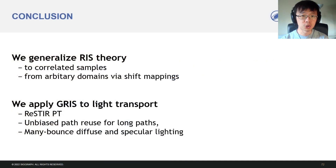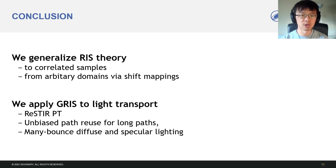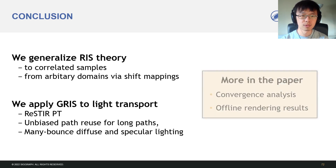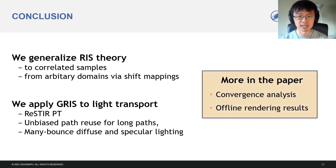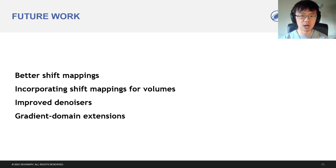In conclusion, we generalize ReSTIR theory to correlated candidate samples from arbitrary domains via shift mappings. We apply the theory to light transport to prototype ReSTIR PT, which enables efficient and unbiased path reuse for long paths by resampling. It captures many-bounced diffuse and specular lighting in real-time. We have not covered convergence analysis and offline rendering results in this talk — please see the paper for these and much more. For future work, we expect better shift mappings to improve the handling of caustics, add support for volumes, and overall improve ReSTIR PT's efficiency.